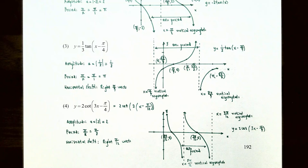This is a good place to stop our video. We talked about how to analyze the graph of the tangent and cotangent functions and how to use transformations to graph variations of those functions. If you have any questions about examples in this video or about your homework for this section, please let me know. I'll see you at the next video when we finish our discussion on more trigonometric graphs.